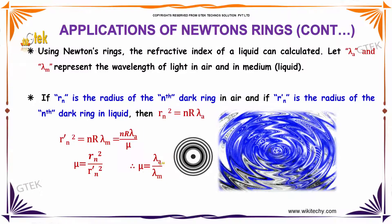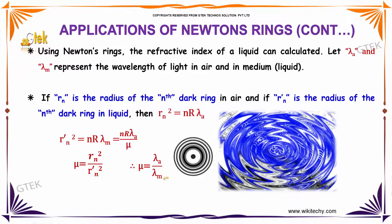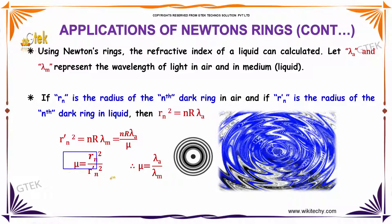The refractive index is equal to the wavelength of the air medium divided by the wavelength of your exact medium, which indicates mu is equal to rn square divided by r dash n square. This provides the refractive index of a liquid.